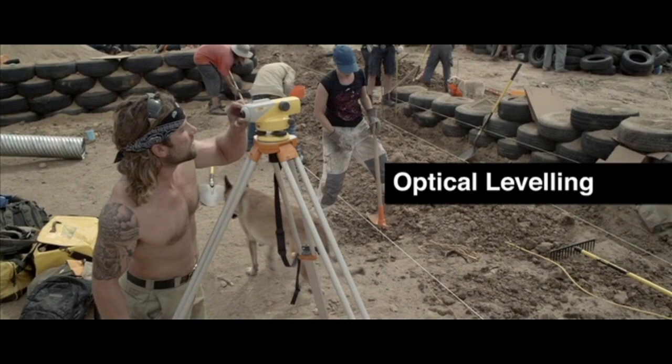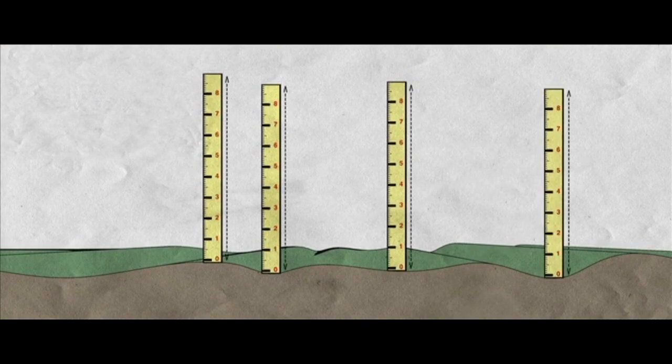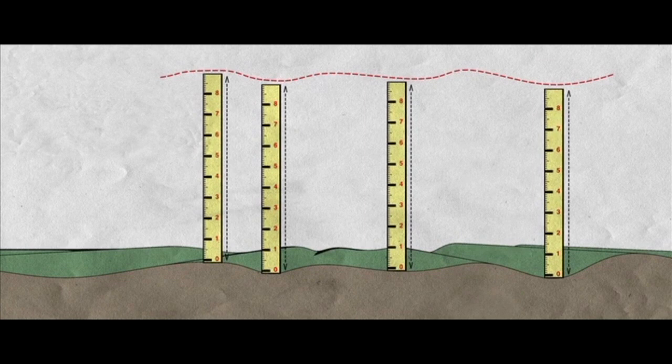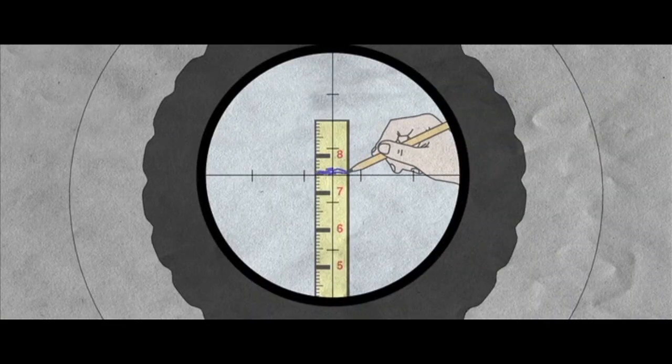Optical leveling. This is performed to define the height differences on ground elevation. To do this, you need a dumpy level on a tripod that gives you a perfect straight line into the distance, to then mark on a leveling rod the height differences.